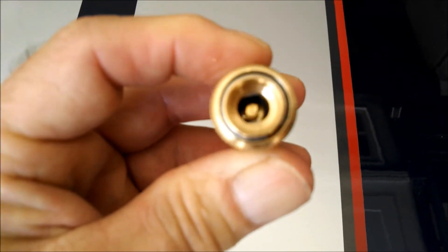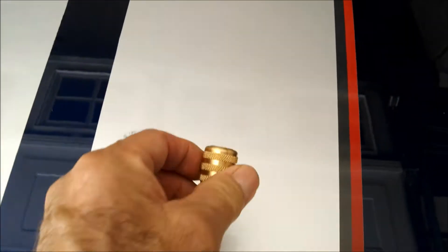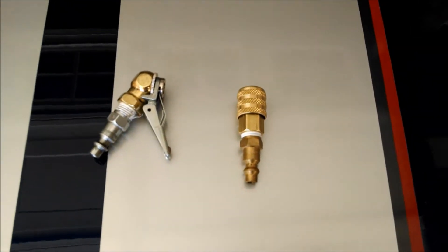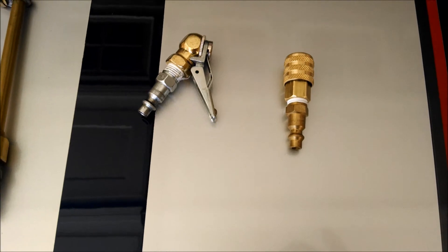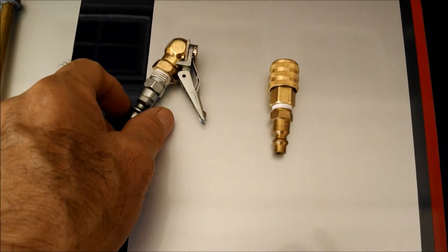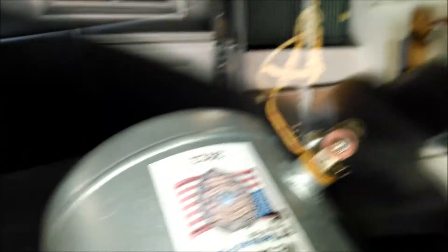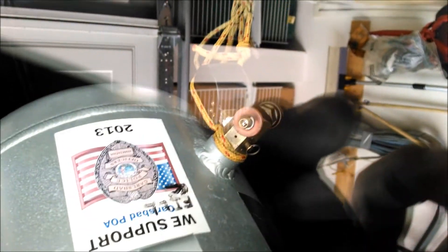You can maybe just barely see them, one on each side. So I don't know if this is going to work any better or not. And what I'm trying to accomplish is being able to push this onto the valve stem, which is right in the middle of that red circle right there, and then walk away from it and let it fill automatically until it reaches the pressure that's set on my regulator.